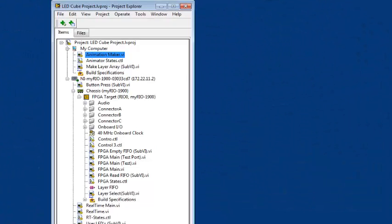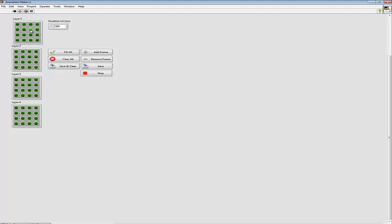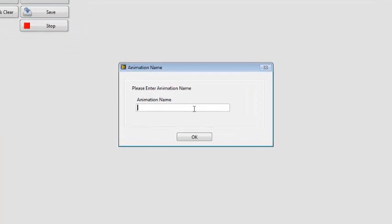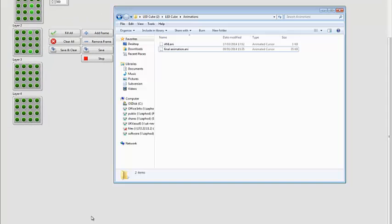If I open up my project, you can see that on my host I have an animation maker VI. Using this VI, I can create animations by switching on or off any LED in any layer. These get saved as animation files in the animation folder, which can then be dragged onto the MyRio.